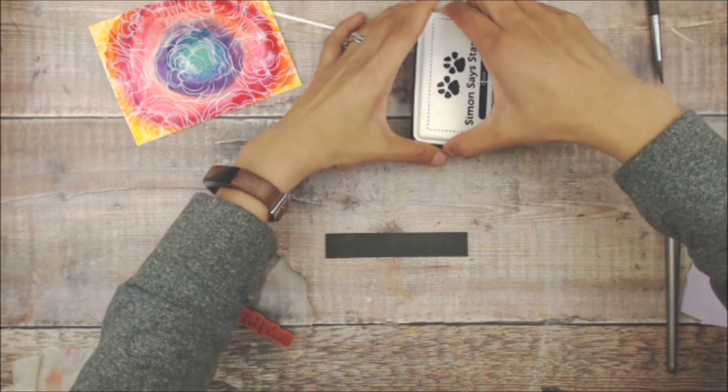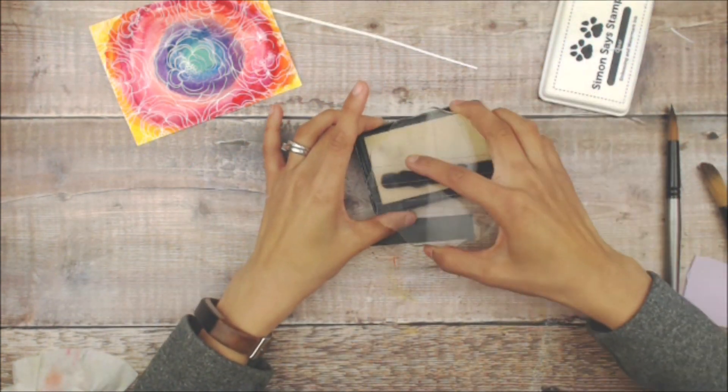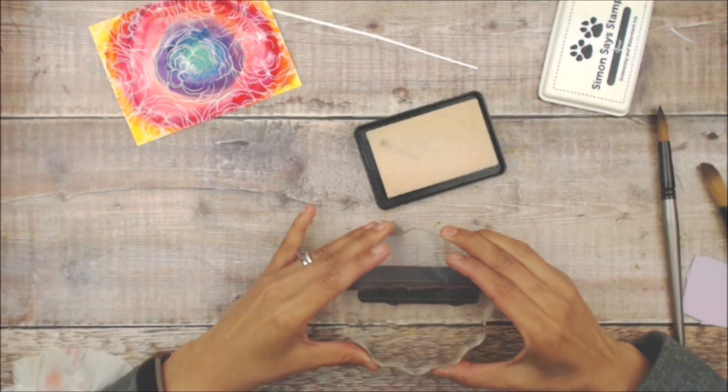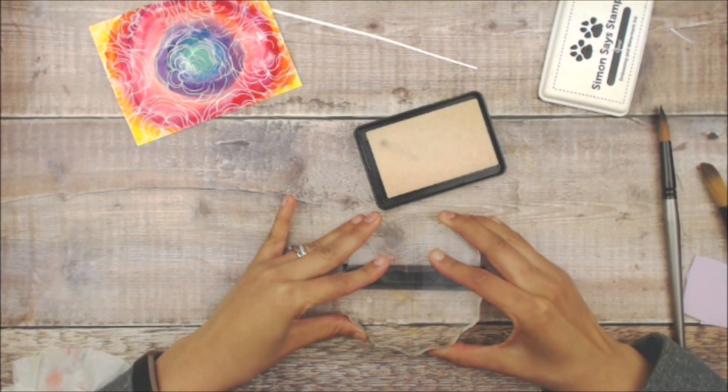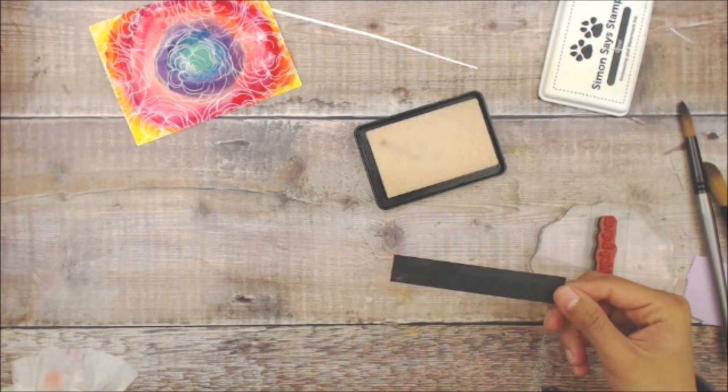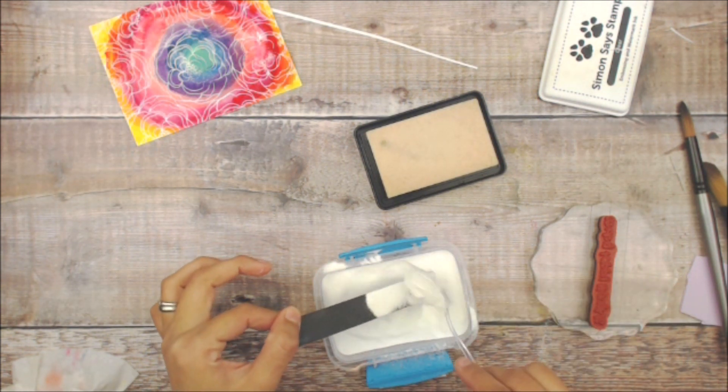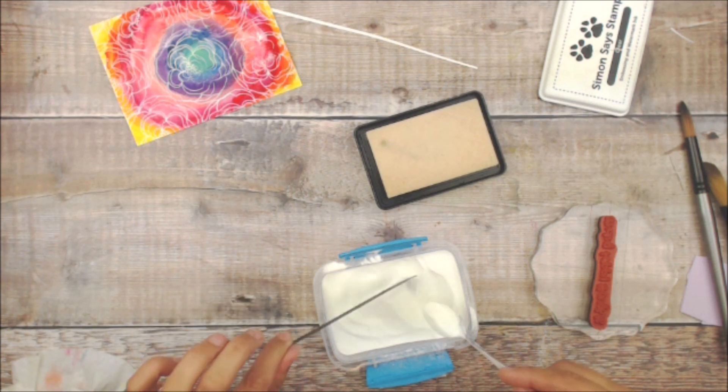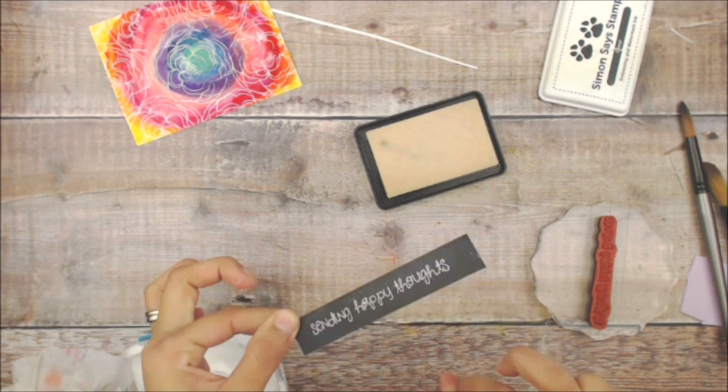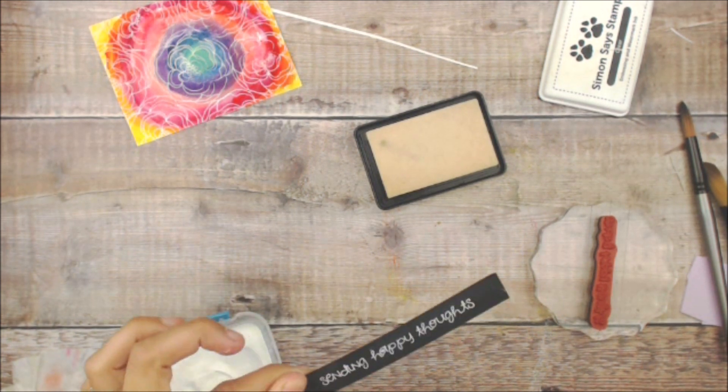I have a pre-cut piece of black cardstock. I'm going to stamp the sentiment from the May 2018 sentiment kit, again using the clear embossing ink. I'm going to get my white embossing powder out again, get my stamp covered, clean it up, and then heat set again.